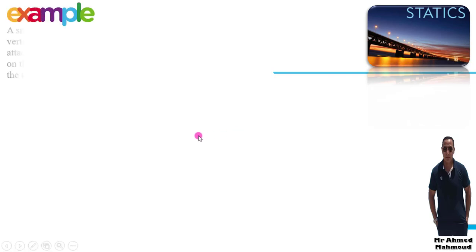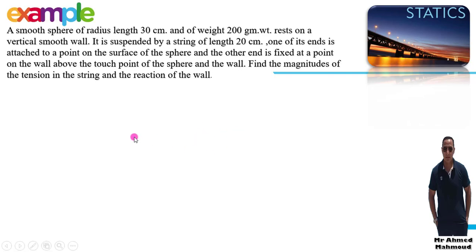Let's take a new example. A smooth sphere of radius 30 cm and weight 200 gram-weight rests on a vertical smooth wall. It is suspended by a string of length 20 cm, one end attached to a point on the surface of the sphere and the other end fixed to a point on the wall above the touch point of the sphere and the wall. Find the magnitude of the tension in the string and the reaction of the wall.